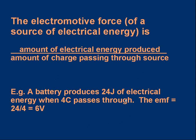That leads us to a definition of electromotive force using an equation. The electromotive force of a source of electrical energy is the amount of electrical energy produced divided by the amount of charge which passes through the source. For example, suppose a battery produces 24 joules of electrical energy when four coulombs pass through it. The EMF is 24 divided by 4, which equals 6 volts. This means six joules of energy are being provided for each coulomb that passes through the battery — six joules per coulomb.